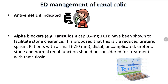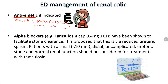Anti-emetics, if indicated — if the patient is vomiting, you use them. Anti-emetics also have potential pain-relief benefit, similar to NSAIDs or paracetamol. For example, metoclopramide (Maxolon) at 10 mg, given IV or IM — IV is usually preferred. It has a good analgesic effect as well.